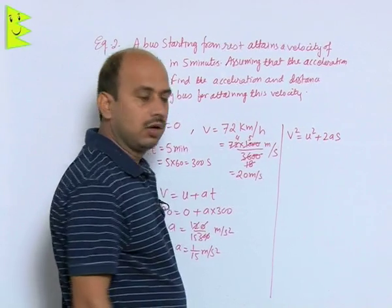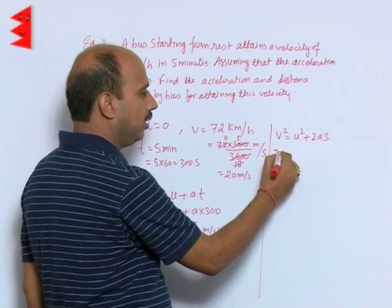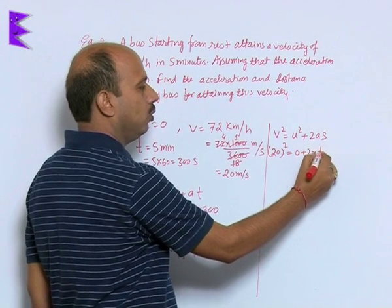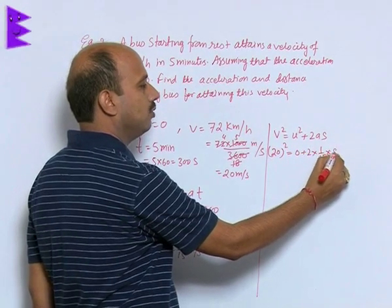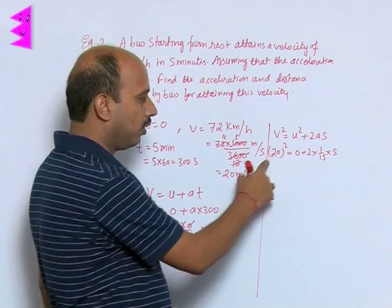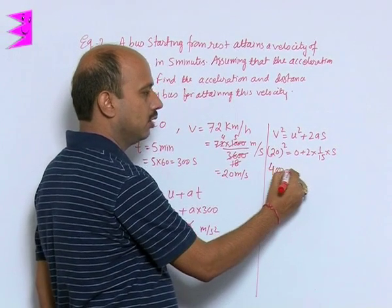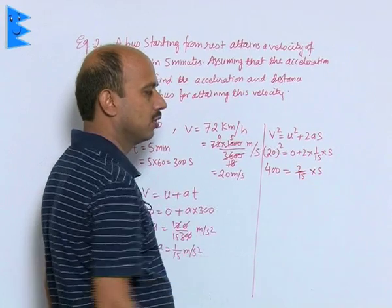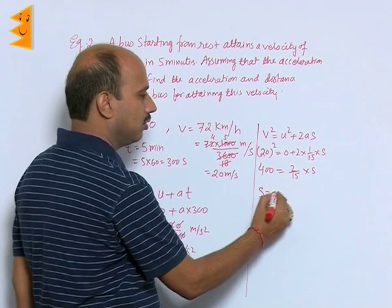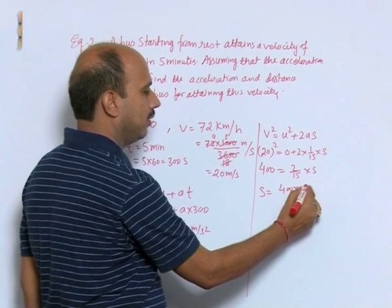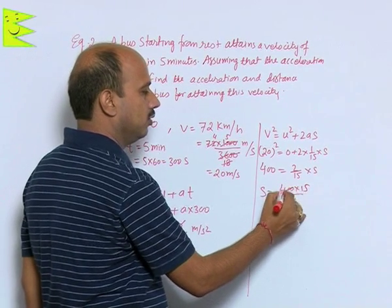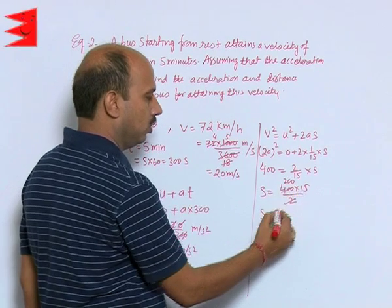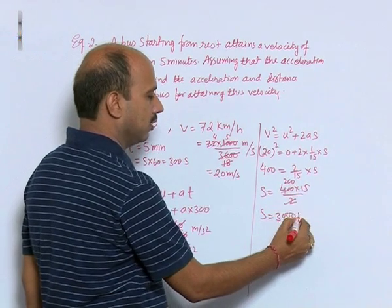Here we have done v is 20 squared equals 0 plus 2 into 1 by 15 into s. Square of 20 is 400 equals 2 upon 15 into s. So we can write s equals 400 into 15 divided by 2, this is your 200, so we can write s equals 3000 meters.